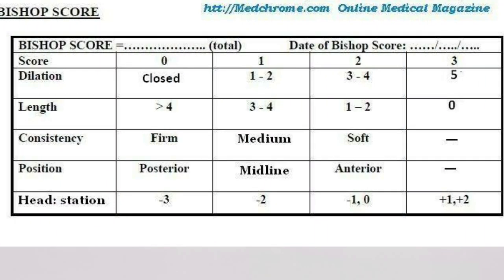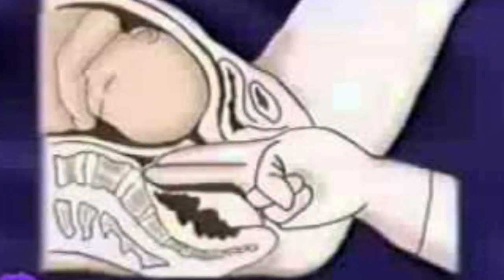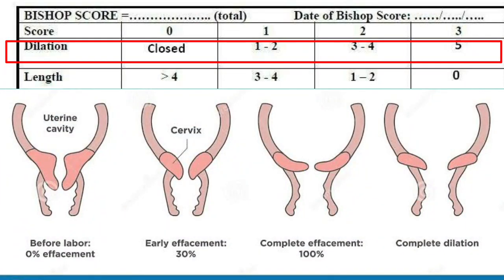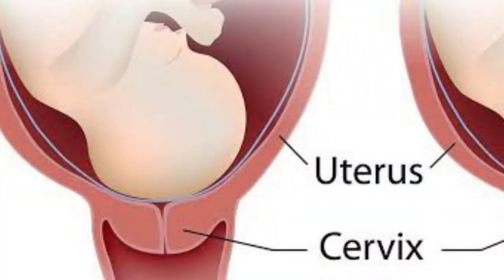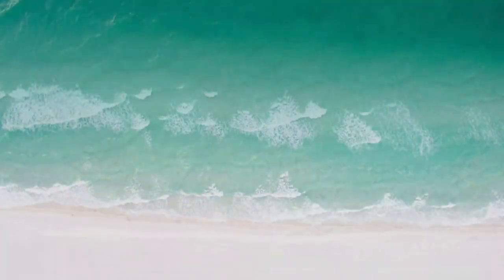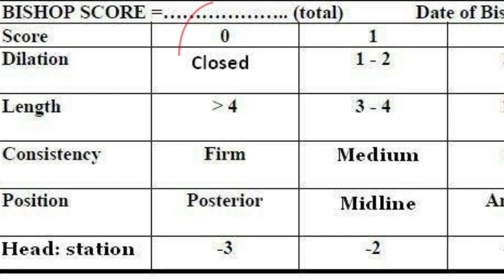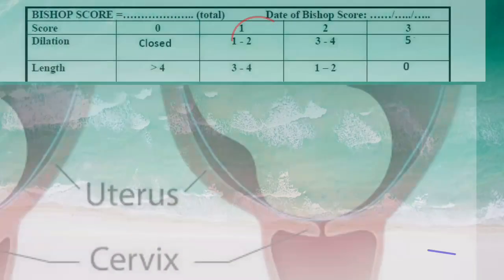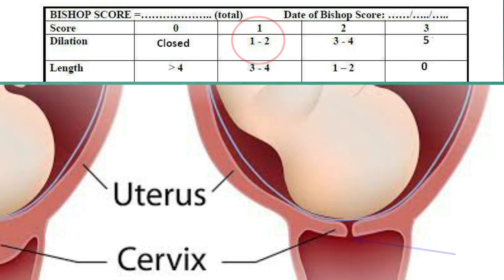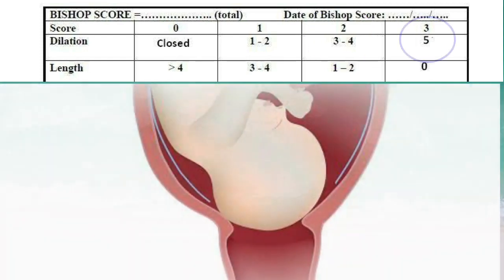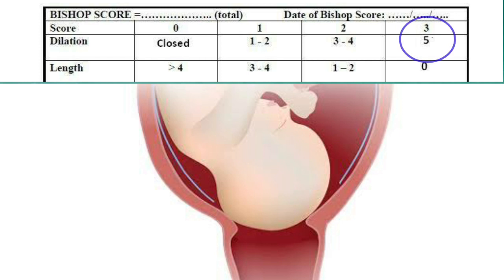Here you can see the Bishop Score chart. The parameters are based on vaginal examination. For cervical dilation: if the cervix is closed, the score is zero. If dilated one to two centimeters, the score is one. If dilated three to four centimeters, the score is two. If dilated five centimeters or more, the score is three.